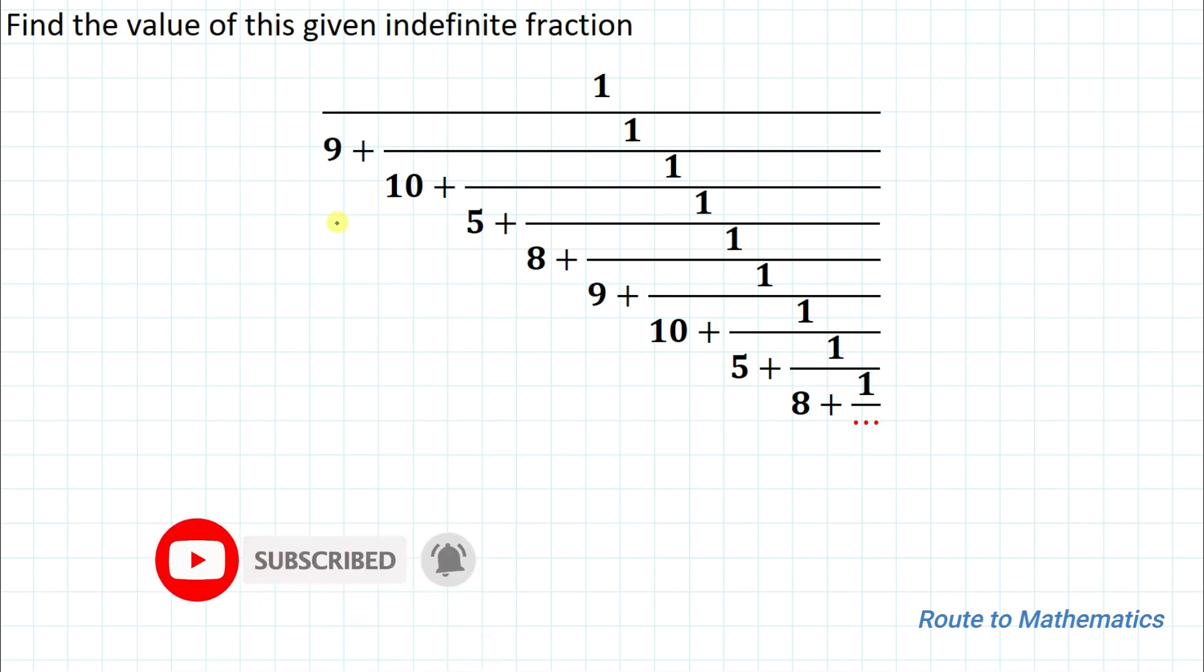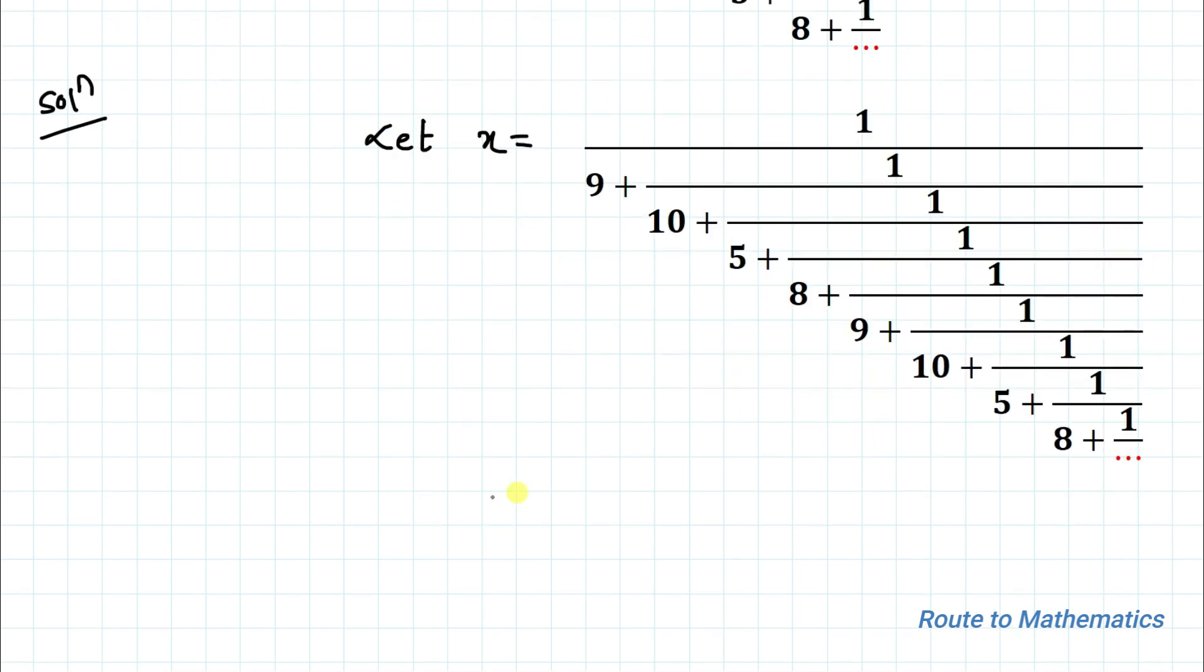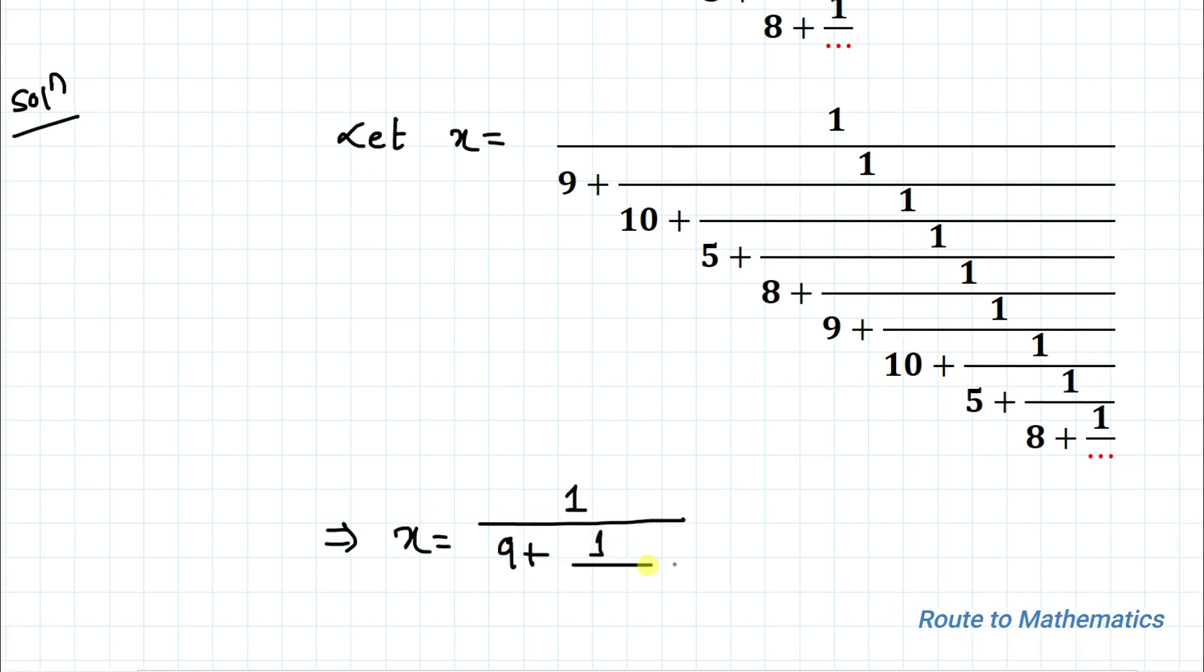Without any delay, let's start the solution. In the first step, let's take x equals to the given fraction. We can write x equals, you can see that the fraction is keep on repeating, so we can write 1 by 9 plus 1 by 10 plus 1 by 5 plus 1 by 8 plus x.